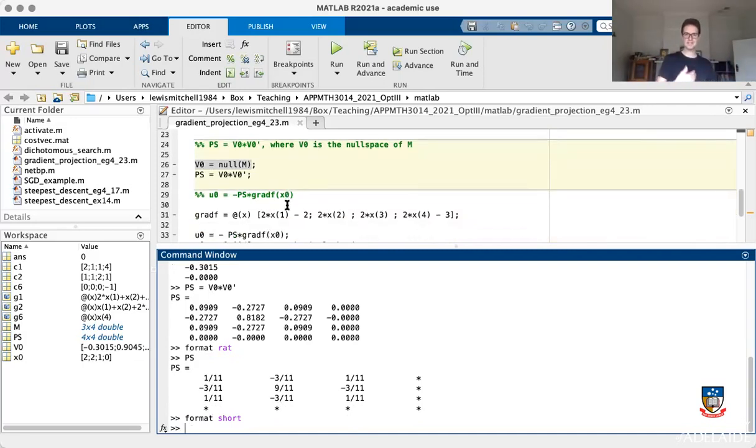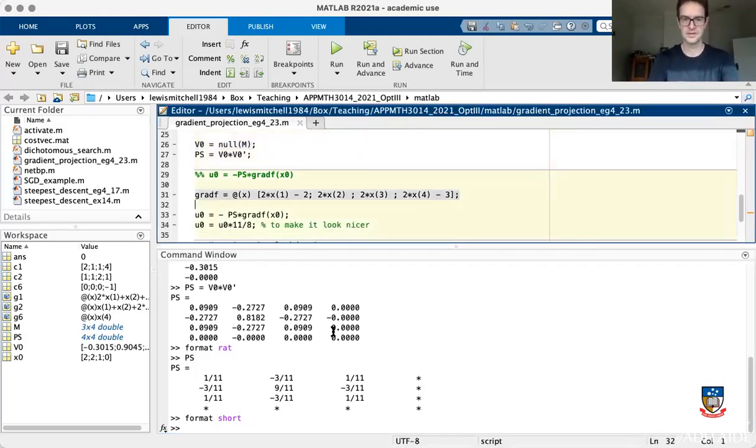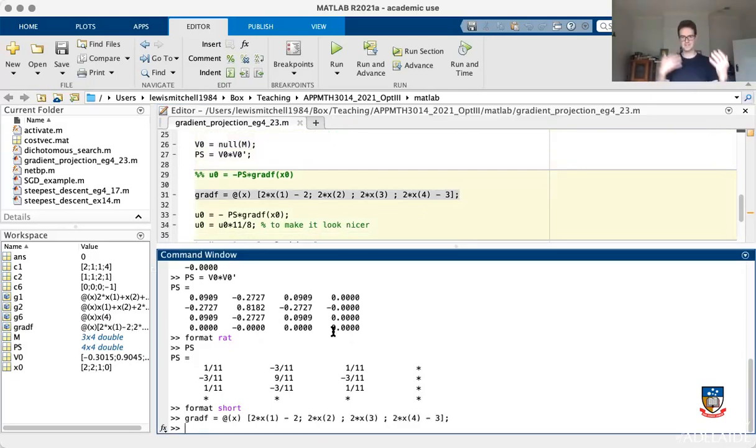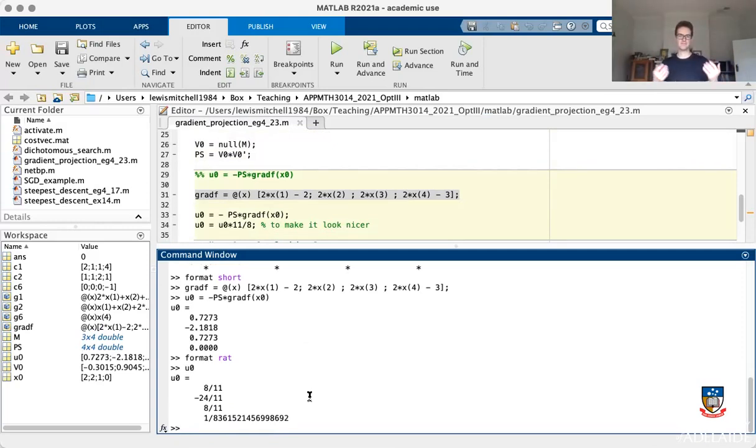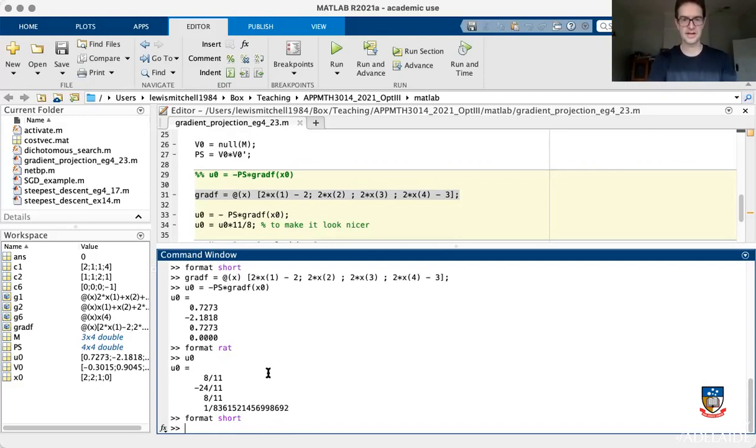Now, what do we want to do with this? So now that I've got this projection matrix, my descent direction, my U naught is going to be negative PS times the gradient of F evaluated at X naught. So I need the gradient of my cost function, which is this piece here. So I'll write that function in. So that's a vector. And I need to evaluate the gradient of F at X naught, multiply it by PS. And that'll give me U naught. So I'll type this out. So negative PS times gradient of F evaluate at my starting point X naught. That gives me a vector. If I do this in, we look at that there again. So this looks like eight over 11, negative 24 over 11, eight over 11, but then a very small number. That's essentially just a zero.